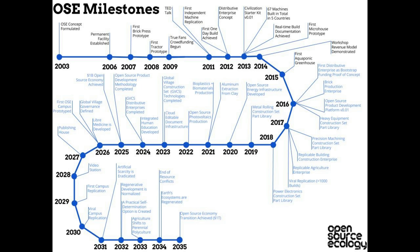I'll briefly go through the further goals — what's coming from 2017 to 2035. While we try to master the mechanical technology by 2016 with a tractor construction set, the next step is starting to make our own parts. For 2017, the first thing is a precision machining construction set part library — mastering the ability to do precision heavy machining, like CNC machining, to start making parts. If we do the bulk custom fabrication work in the tractor construction set in 2016, you've got to start making your own engines and parts after that.